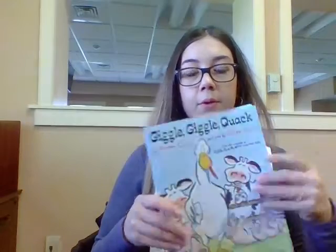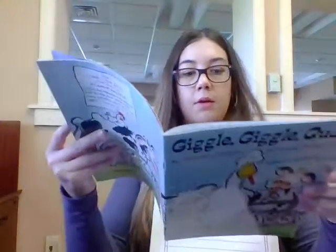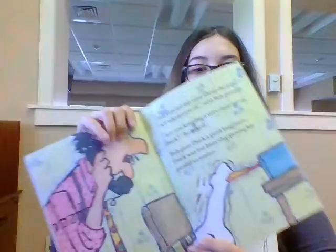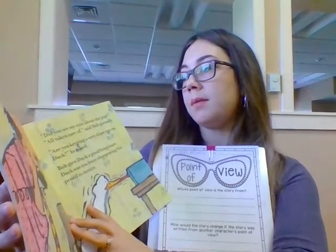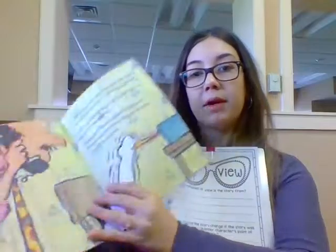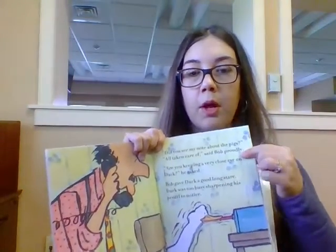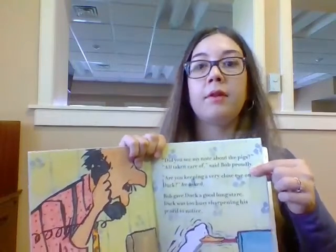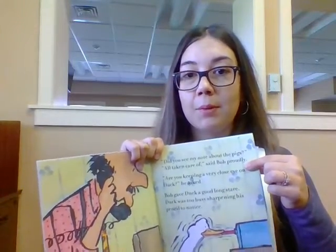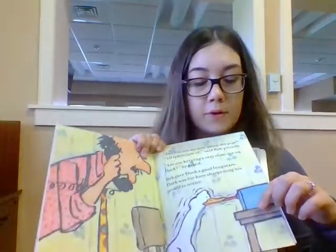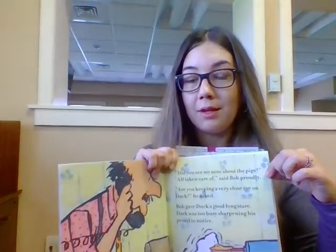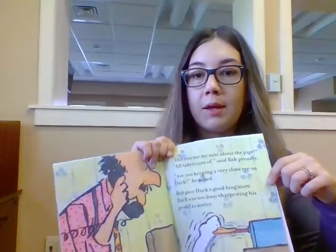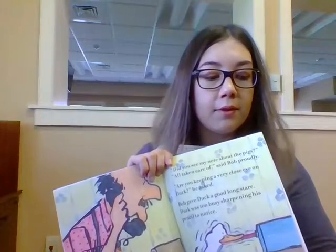So we read Giggle Giggle Quack and we used this page. Remember Bob had gotten a call from Farmer Brown, and Farmer Brown said, did you see my note about the pigs? All taken care of, said Bob proudly. Proudly was our clue. Proudly lets us know that Bob was telling the story. We got to see his feelings — he is feeling proud. He thought he did what Farmer Brown had asked him to do, that he had been following directions. When we know a character's feeling or what they're thinking, we can decide that's who's telling the story — it's their point of view.